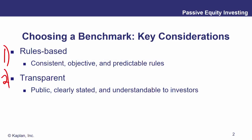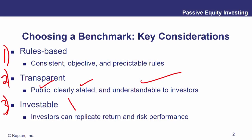We need to be transparent — it's got to be public, clearly stated, and understandable to investors. Saying 'I spin a wheel every day to figure out which stock to put in my portfolio' is not consistent and won't give predictable results. And probably most importantly, it's got to be investable — investors have to be able to replicate both the return and the risk performance. If clients can't invest in it, how is that a reasonable benchmark?